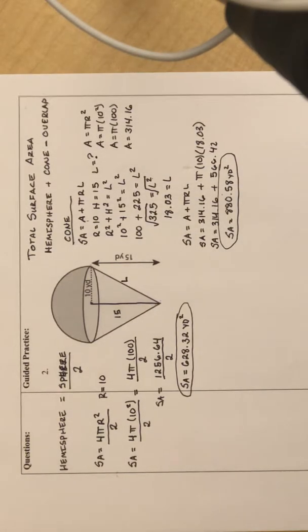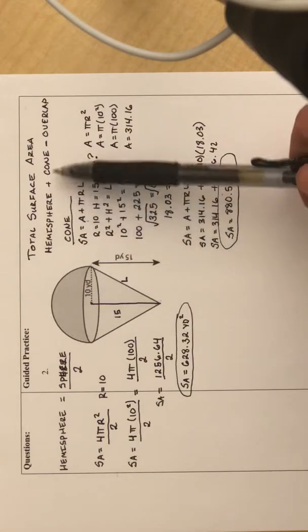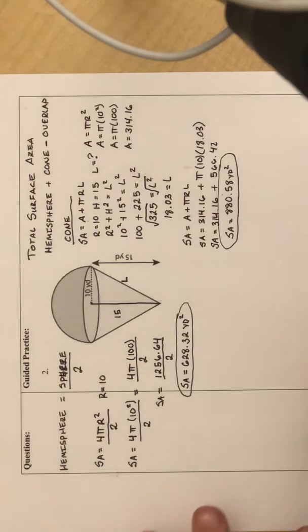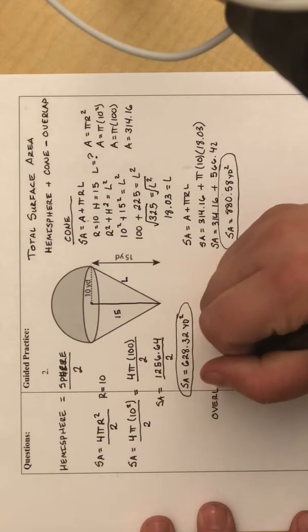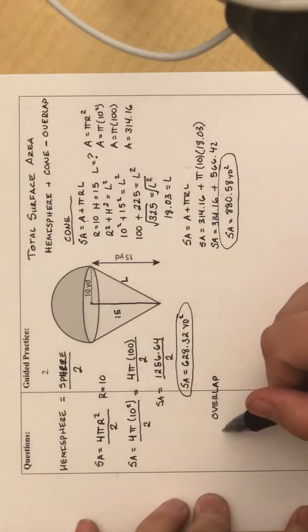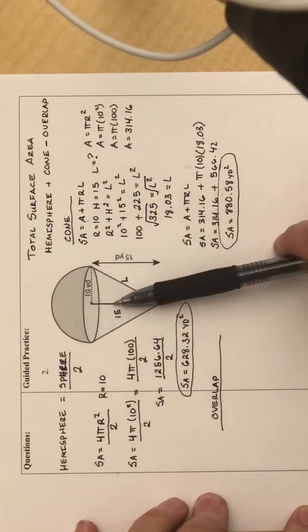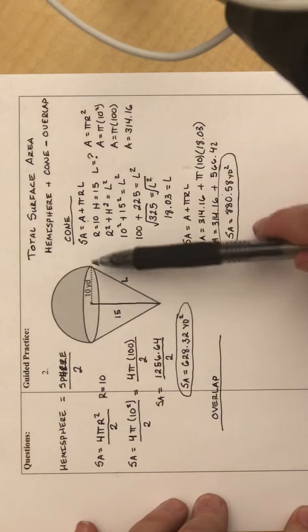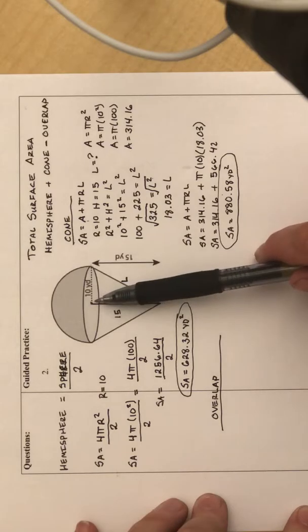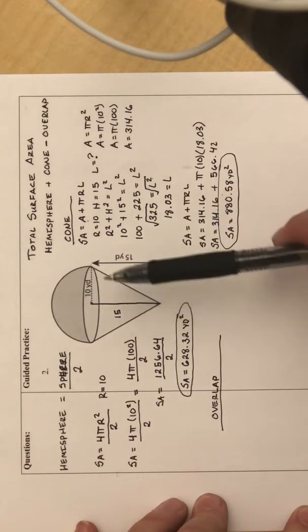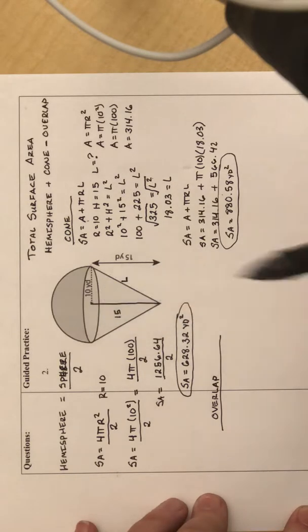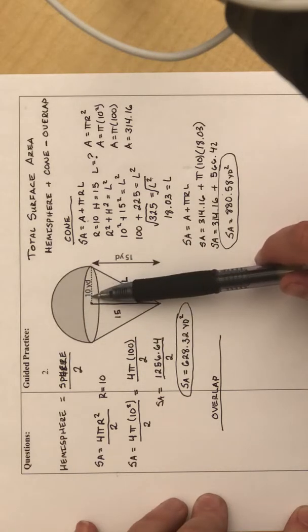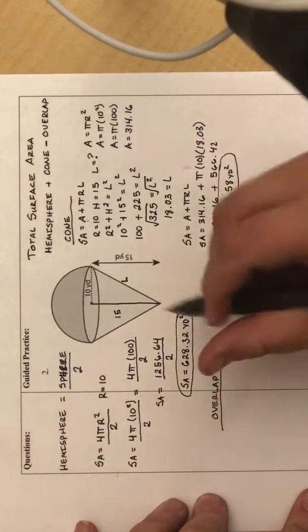So I have two out of the three things I need. I have the surface area of the hemisphere, the surface area of the cone. I still need to find the overlap. So to find overlap, I need to look at where these two shapes meet and what shape they create. You see, this circle here is not getting counted as the surface area because it's inside in between these two shapes. So I'm not going to count that in the surface area. There's only one circle, so that's all I need to get rid of. To find the area of overlap, I look at the shape, the shape of the circle.